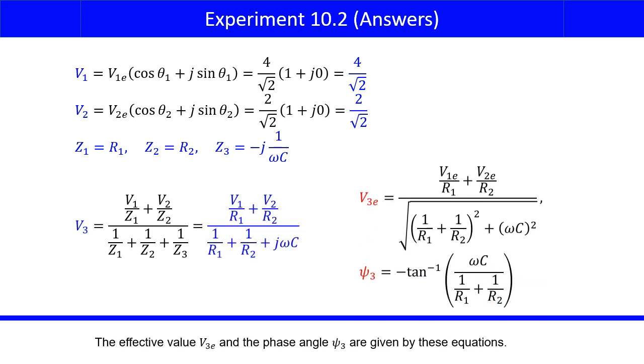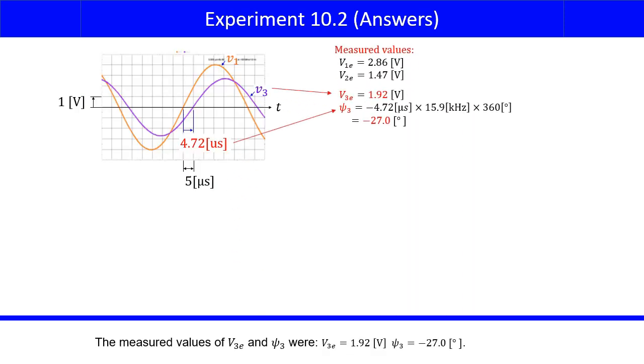The effective value V3E and the phase angle psi 3 are given by these equations. The measured values of V3E and psi 3 were V3E equals 1.92 volts, and psi 3 was negative 27.0 degrees.